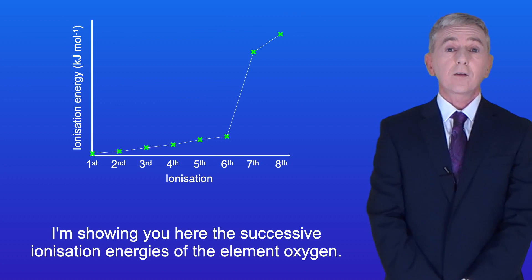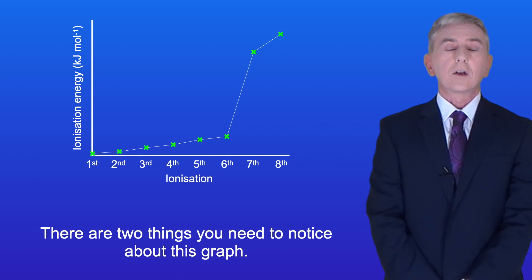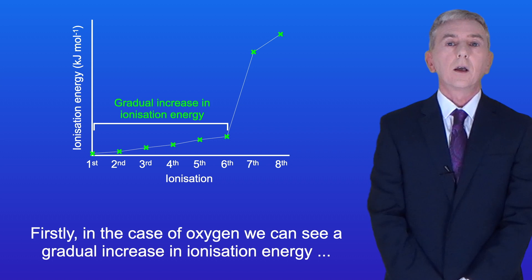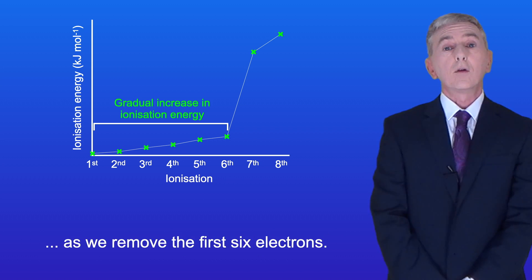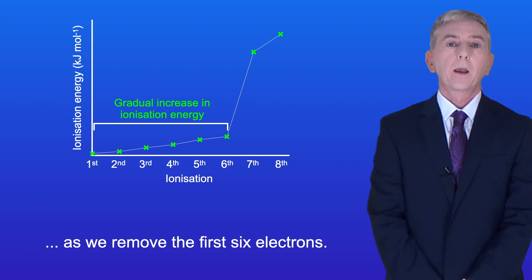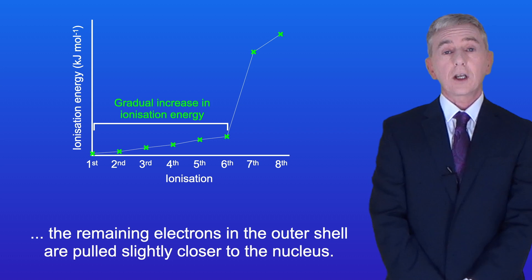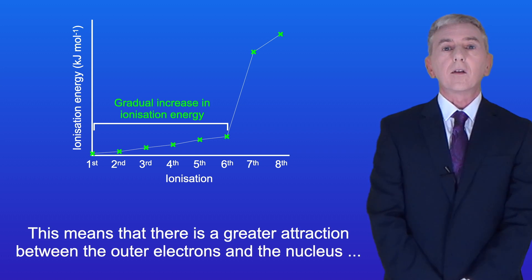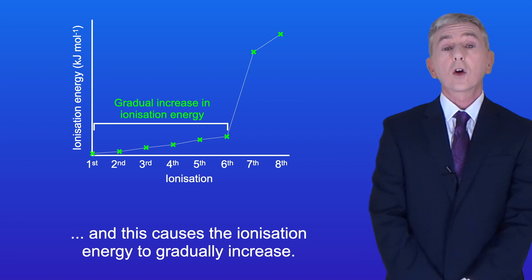I'm showing you here the successive ionization energies of the element oxygen. There are two things you need to note about this graph. Firstly, in the case of oxygen, we can see a gradual increase in ionization energy as we remove the first six electrons. This is because each time we remove an outer electron, the remaining electrons in the outer shell are pulled slightly closer to the nucleus, creating a greater attraction, which causes the ionization energy to gradually increase.